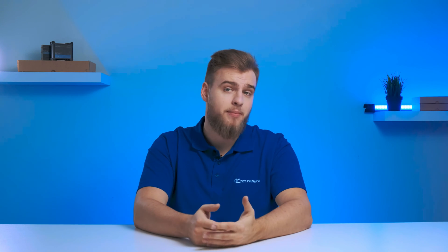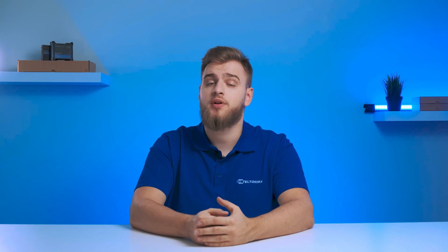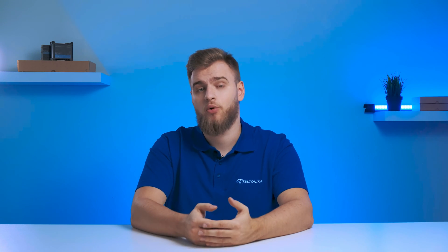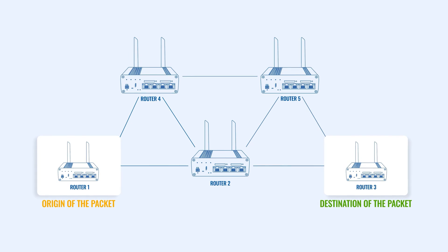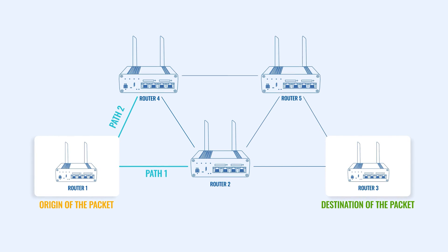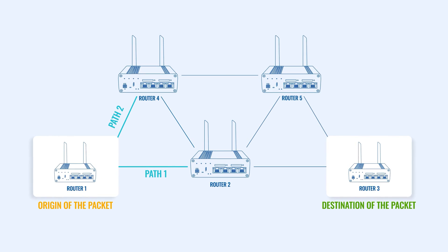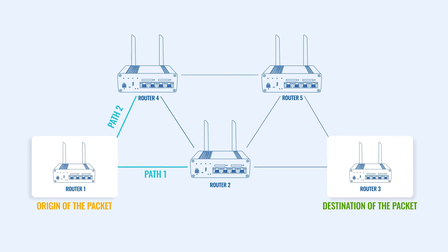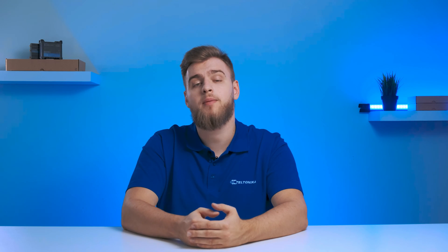On the other hand, dynamic routing is used to automatically deploy a mass of desired routes. This type of routing has multiple routers which connect a myriad of endpoint devices and interconnect them to one big wide area network, or WAN for short.